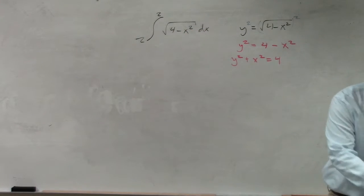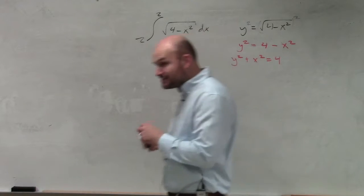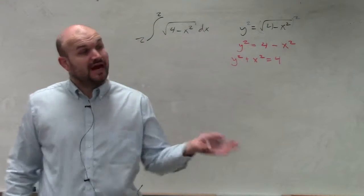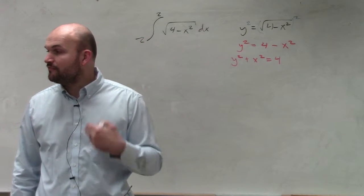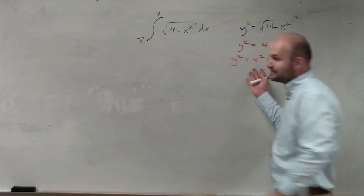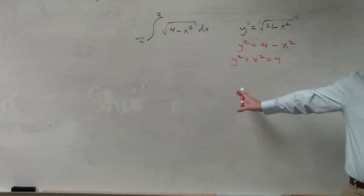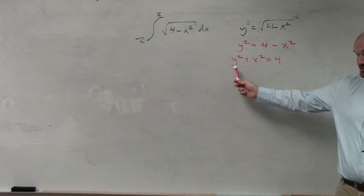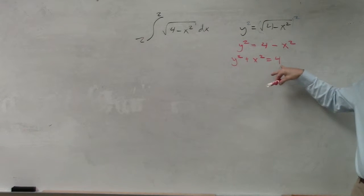Now hopefully in your pre-calculus section, you guys remember conic sections. This would be, or even in geometry, I'm sure you also studied the formula for a circle. So you guys should be able to identify that this is going to represent a formula for a circle, where the center is going to be at (0, 0), and the radius is going to equal 2.